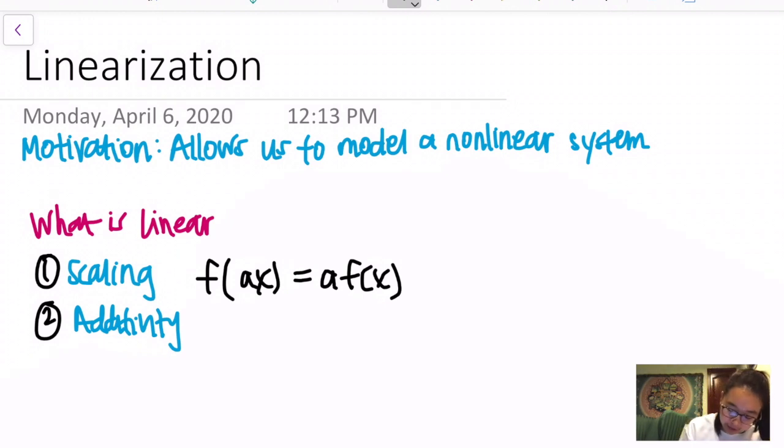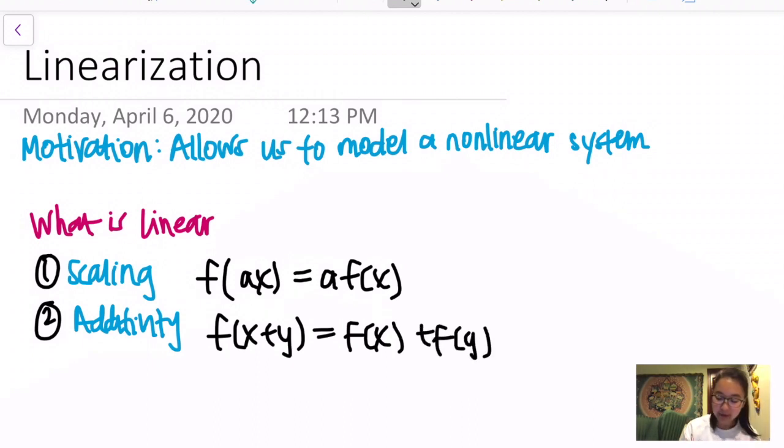Additivity means that if you have f(x+y), then that should be equal to f(x) + f(y). So these are the definitions that make a function linear.